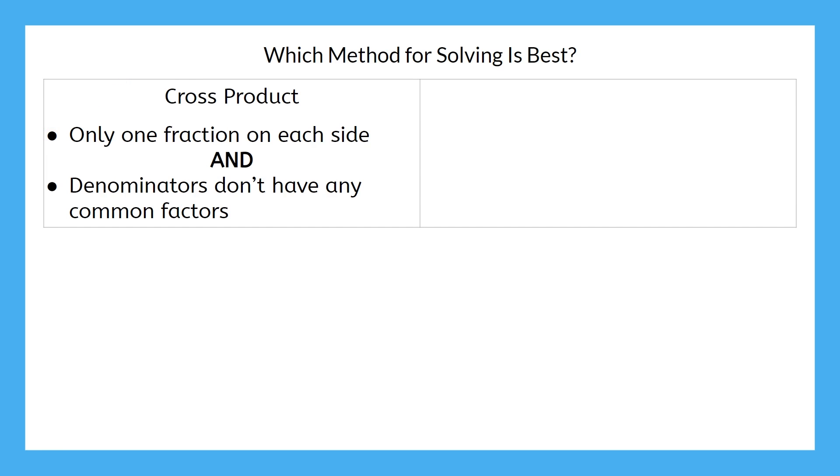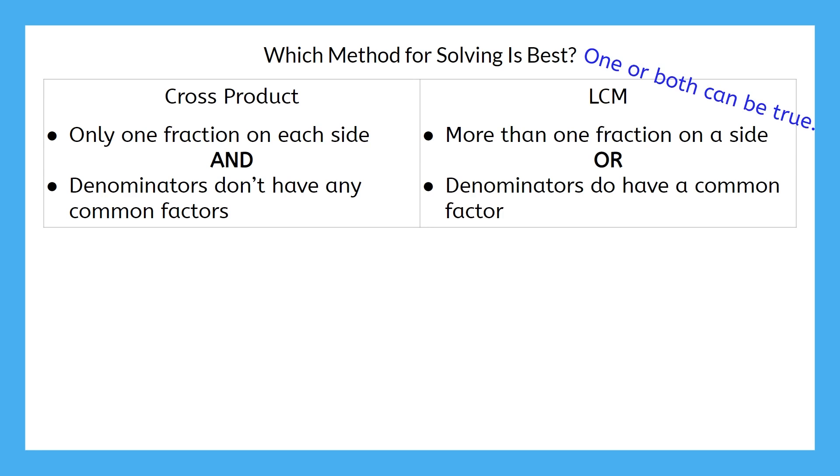The goal for today is to get comfortable using the LCM, or least common multiple, to solve. We use the LCM when there is more than one fraction on the side of the equation, or when there is a common factor in the denominators. So, if one of these things is true, use the LCM, or if both of them are true.